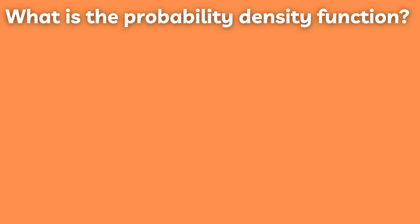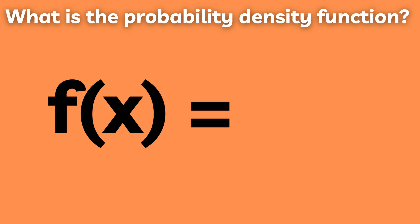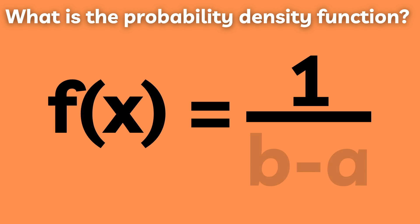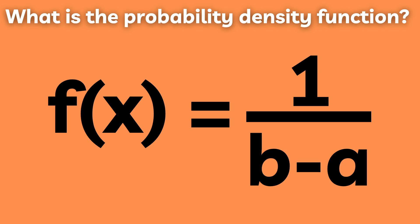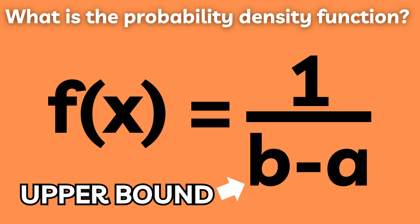To answer the first question, we need the formula for the probability density function, which is f(x) = 1/(b-a). In this formula, 1 is the total probability of all possible outcomes, i.e., 100% or 1. b is the upper bound,